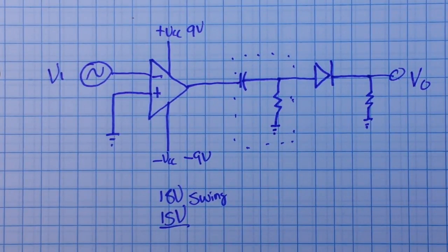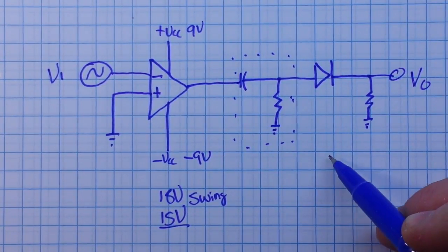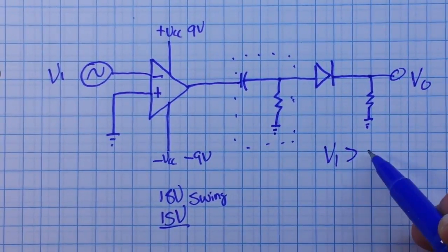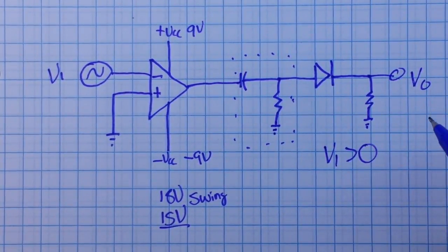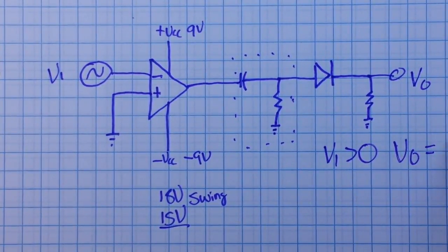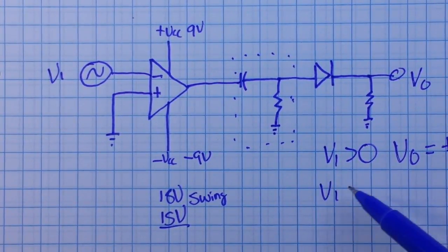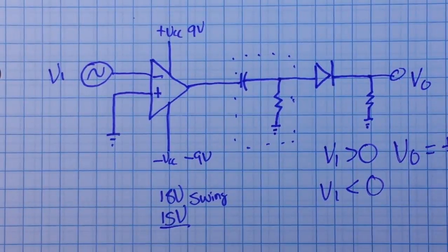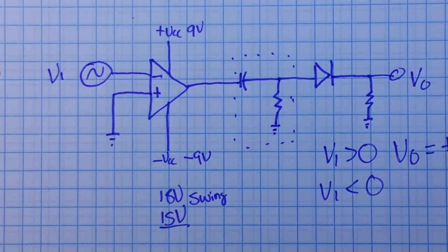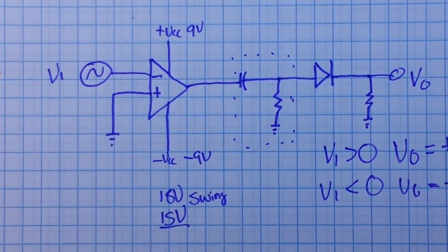Minus V cc when V in is less than zero. So when V in is greater than zero, V out will be at plus V cc, and when V in is less than zero we will be at minus V cc. So far so good, so simple right?